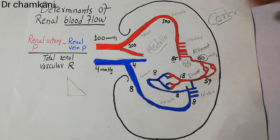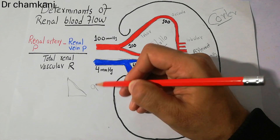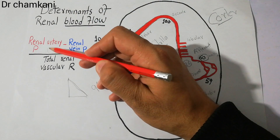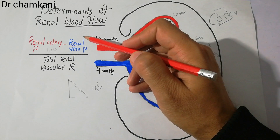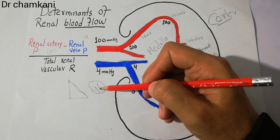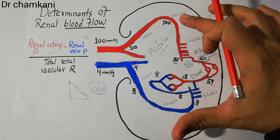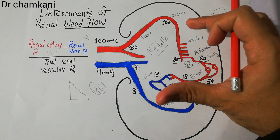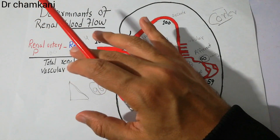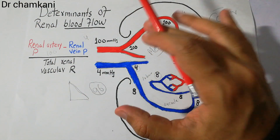The renal vein pressure is also around 4 mmHg. So the total decrease in pressure is around 96 mmHg — renal artery at 100 mmHg minus renal vein at 4 mmHg. The resistance at each step can be calculated from the pressure drops, and when placed into the equation, this gives us the renal blood flow.